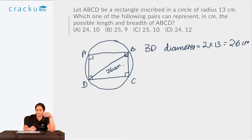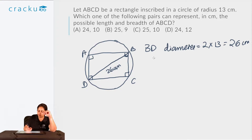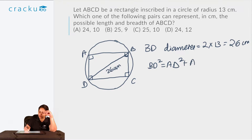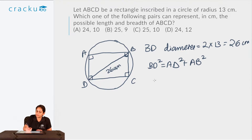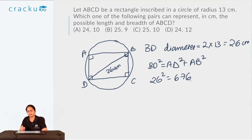We have to find values of AB and AD such that BD equals 26 centimetres. Since the angle at A is 90 degrees, triangle ABD is a right angle triangle. So BD² = AD² + AB². We just have to figure out pairs of AB and AD such that the sum of their squares equals 26², which is 676. So we have to find pairs whose sum of squares is 676.